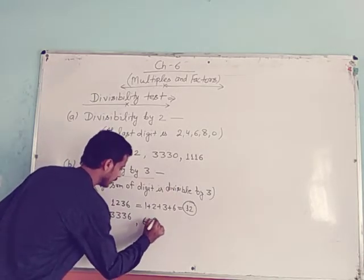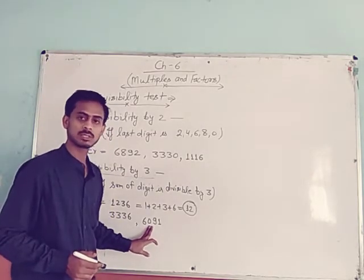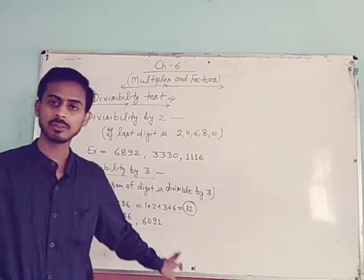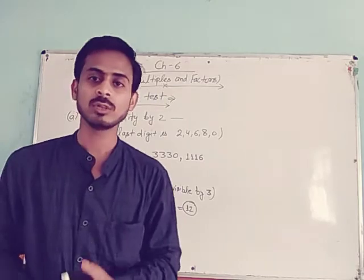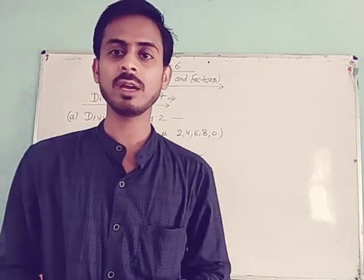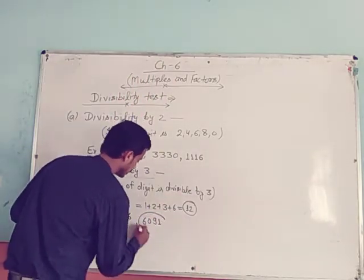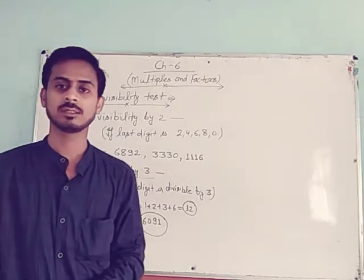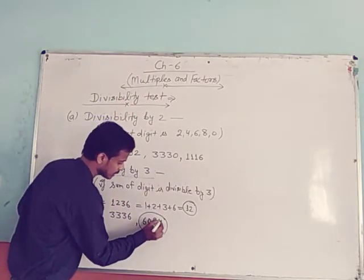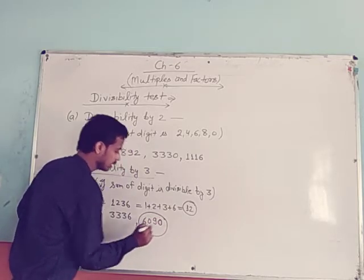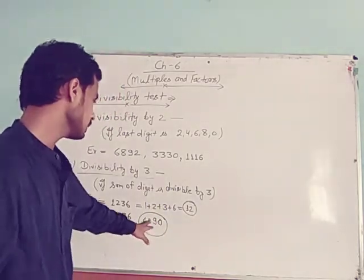Another example: 6091. Sum of digits: 6 + 0 + 9 + 1 = 16. And 16 is not divisible by 3 — since 3 × 5 = 15 and 3 × 6 = 18. So 6091 is not divisible by 3. But if the digit were 0 making the sum 15, then the number would be divisible by 3.